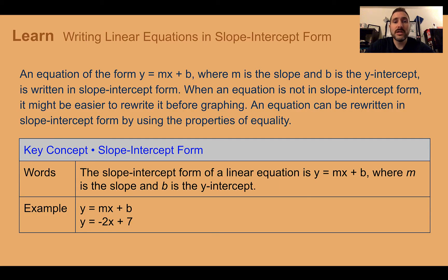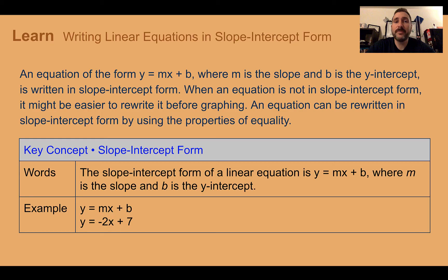Our key concept is slope-intercept form: y equals mx plus b. You're going to hear it a lot. m stands for the slope, b stands for the y-intercept. So in our example, y equals negative 2x plus 7 — m is negative 2, so the slope is negative 2, and b is 7, so the y-intercept is positive 7.